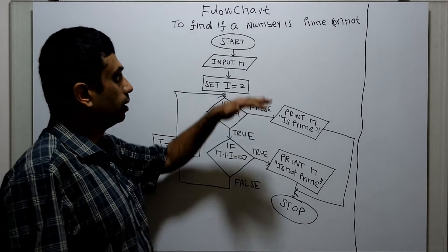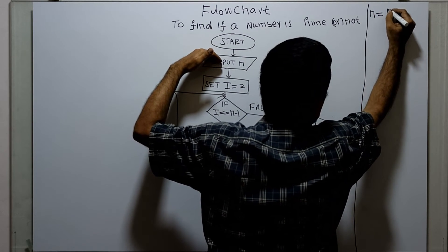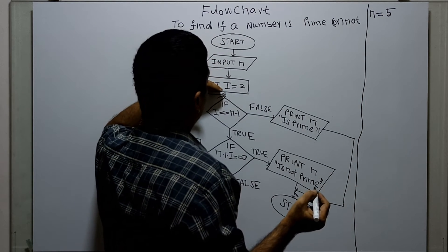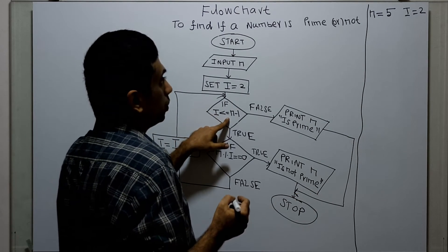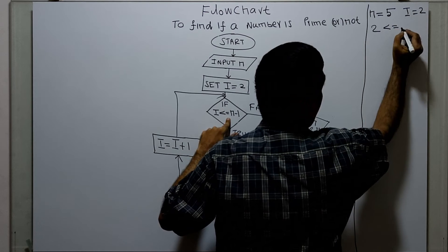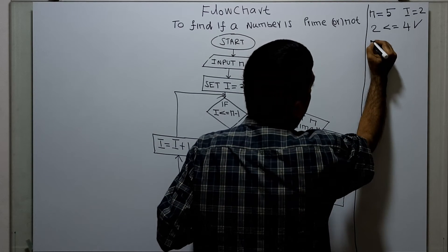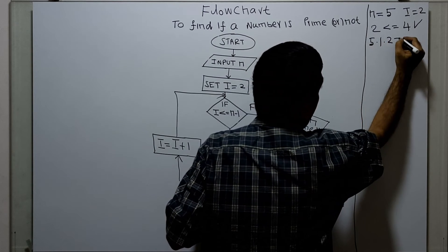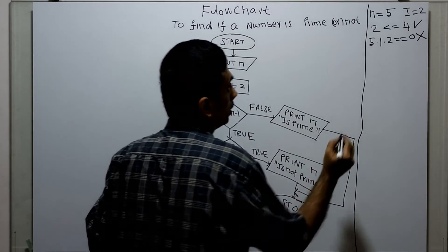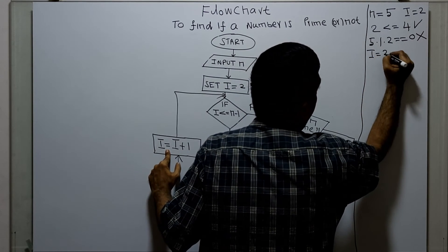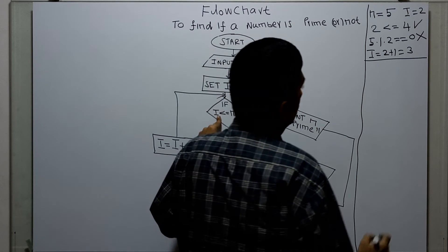Logical start, input n, giving n equal to five. The variable i is initialized to two, i equal to two. Checking i less than or equal to n minus one: two less than or equal to five minus one, which is four — condition is true. Checking n modulo i equal to zero: five modulo two, the remainder is one, so this is false. I am incrementing i by one: i equal to two plus one, which is three. First iteration is over.